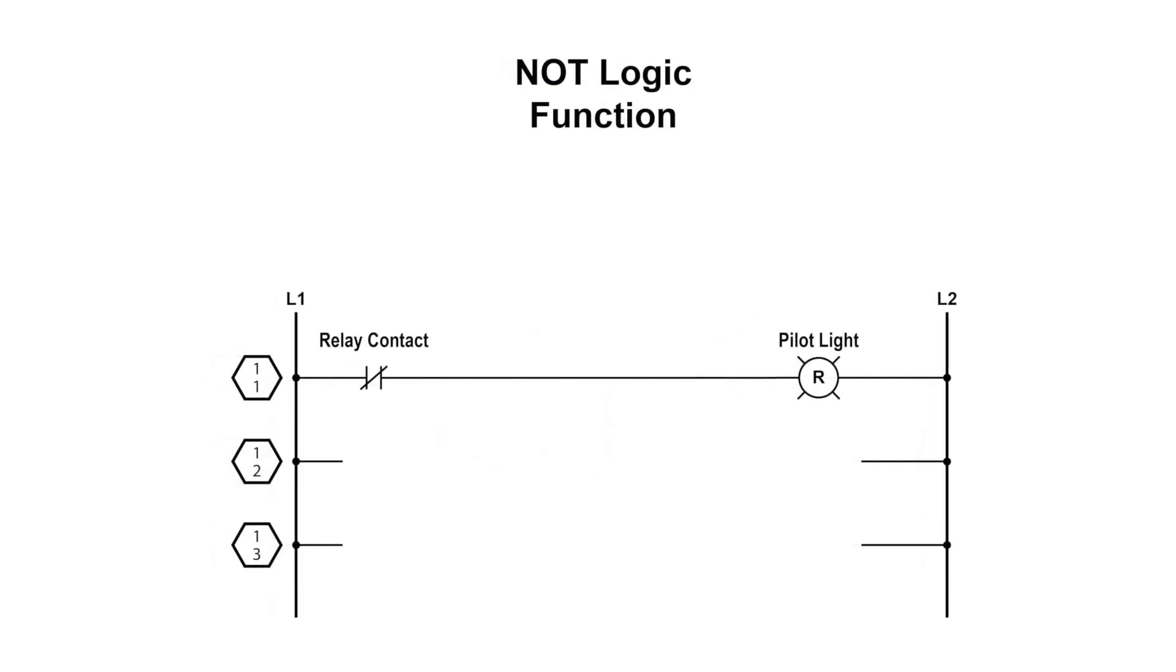The NOT function uses a single normally closed input device instead of a normally open input. The NOT logic energizes the load when the control signal is off. The example shows a relay coil with an indicating light. Its purpose in this instance is to indicate that an area cannot be entered due to a motor running.